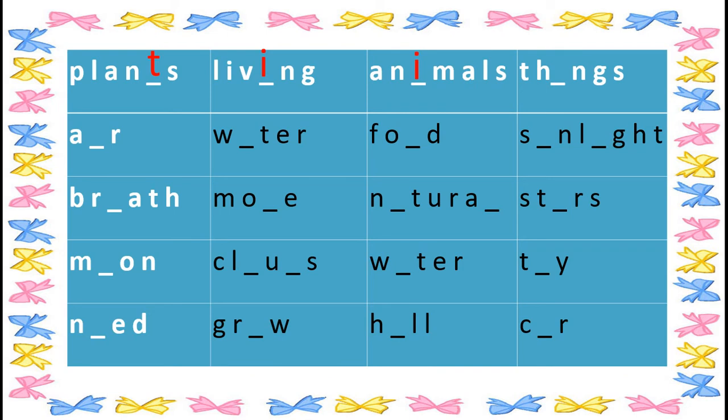In the same way, you have to fill here to complete the word. Now look at the fourth word and fill here to complete the word. Can you guess which letter we need to fill here to complete the word? Very good children — I. Now it becomes things. In the same way, you have to complete the activity.